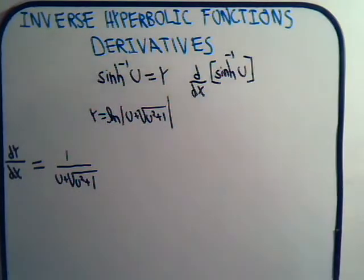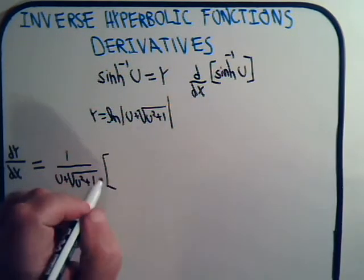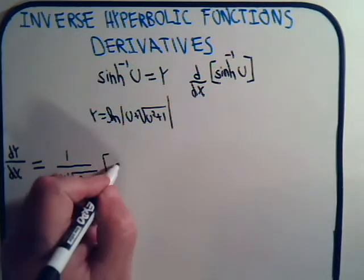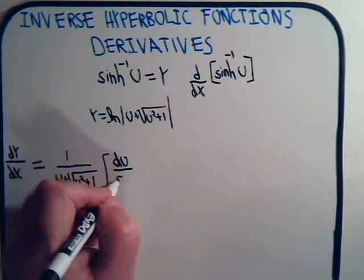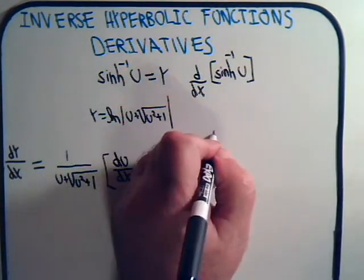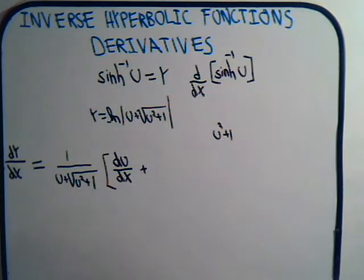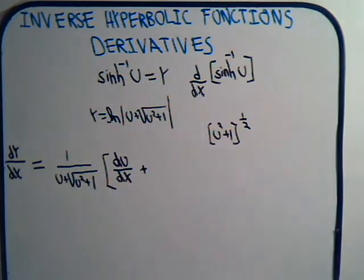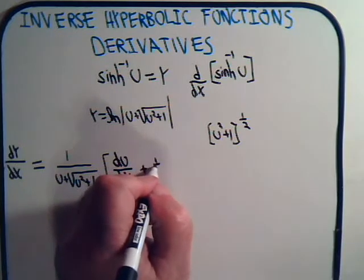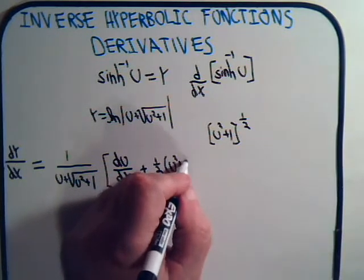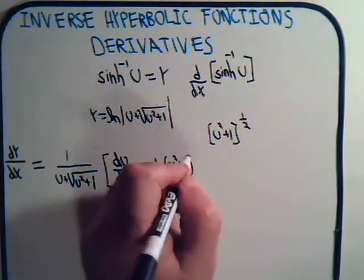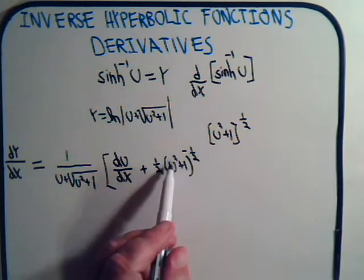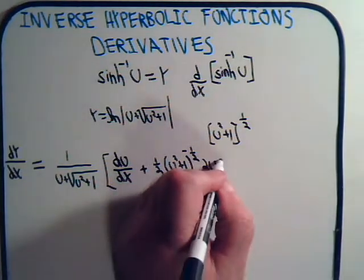So let's see, we're going to have here, the derivative of this here is just du/dx. And then this is u squared plus 1 to the 1 half power. So we'll take this derivative, that's going to be 1 half, times u squared plus 1 to the minus 1 half power. Times the derivative of what's inside, and that's going to be 2, times u times du/dx.